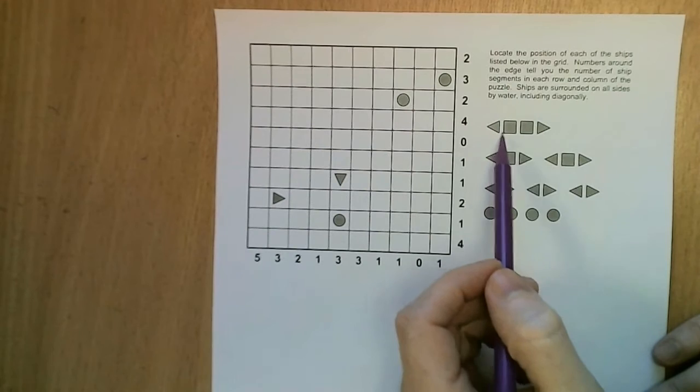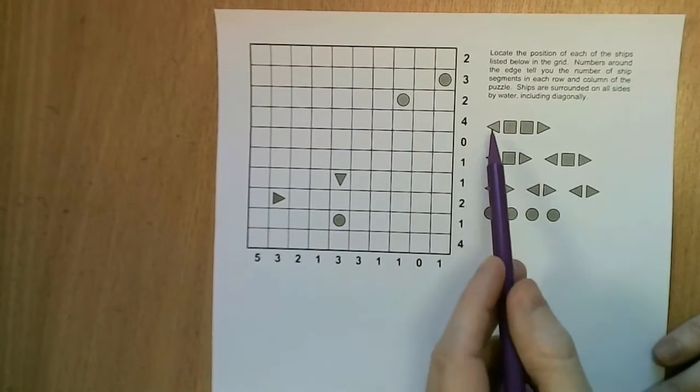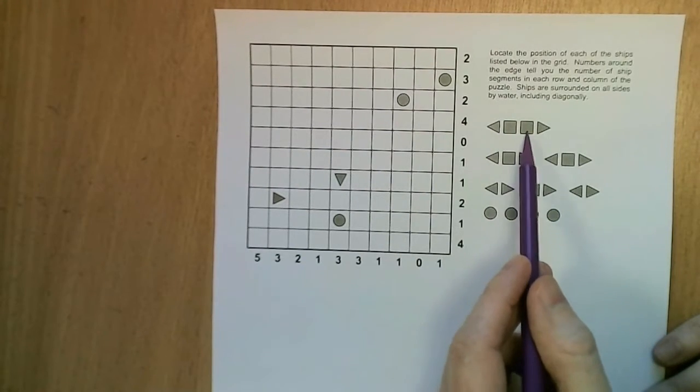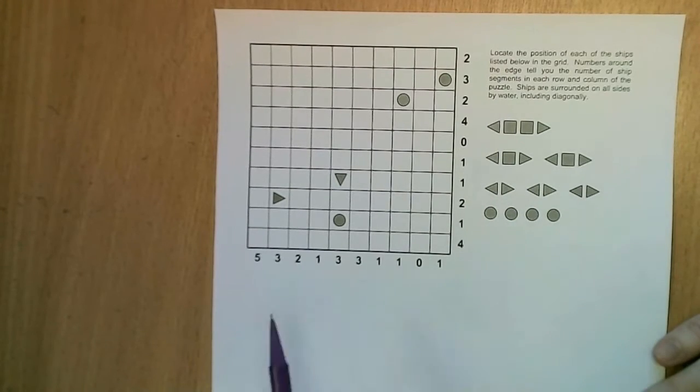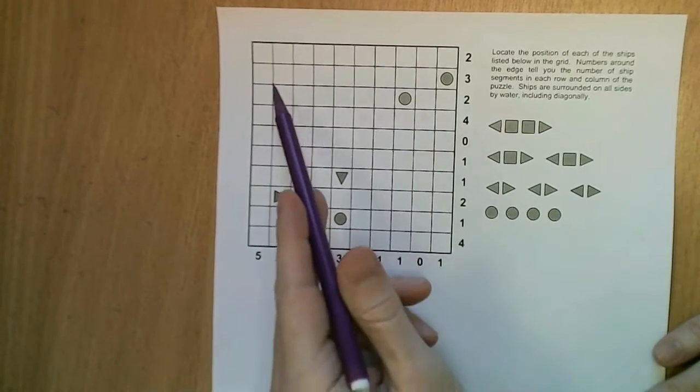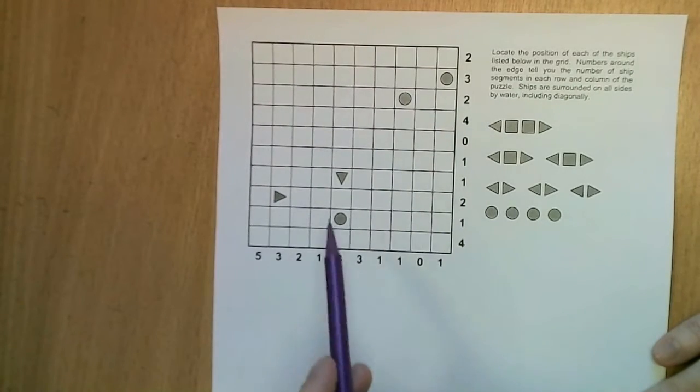There's various ships of different lengths: one composed of four segments, two of three, three of two, and four of one segment, and these must all be placed in this square grid.